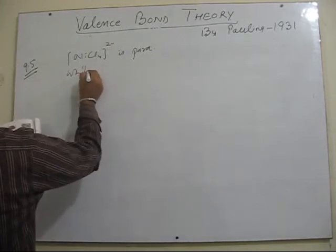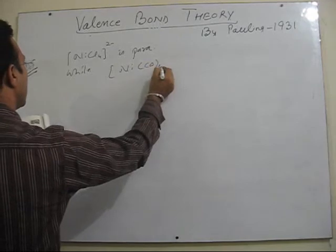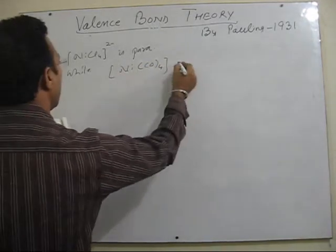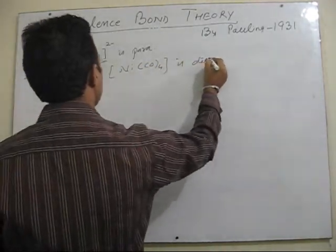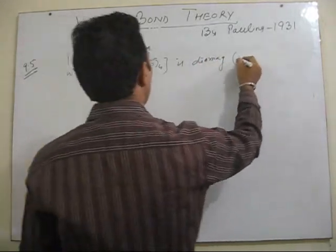According to this problem we have NiCl4 2- is paramagnetic, while nickel tetra carbonyl, nickel is diamagnetic.